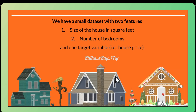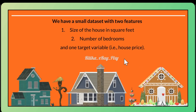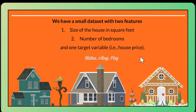Let's understand the working of an artificial neural network using a simple example with three layers: input layer, hidden layer, and output layer. We will predict house prices based on two features: size of the house and number of bedrooms. Suppose we have a dataset with these two features — size of houses in square feet and number of bedrooms — and the target variable is the price of the house.